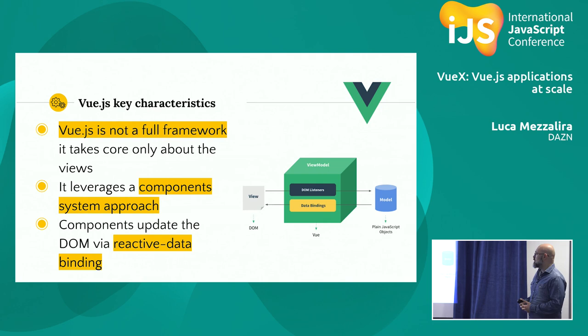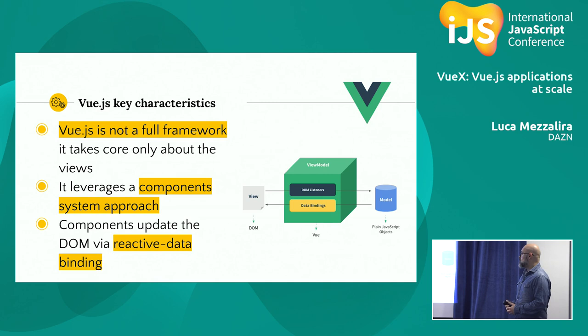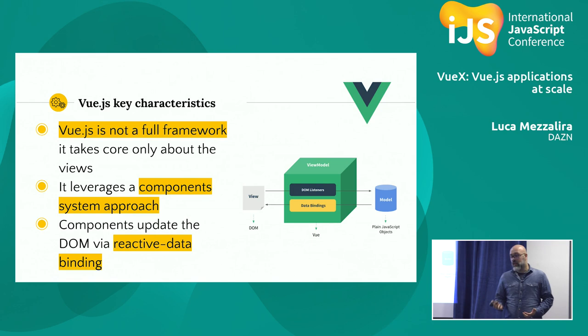The MVVM architecture is very well known in the front-end community. It was introduced by Microsoft several years ago and is used in several languages. I think this implementation is really neat. Another key thing is leveraging the concept of components, which is very important for scalability. When you're capable of wrapping your code inside a component, you can potentially reuse it fairly easily — though you need to be smart about how you wrap your code.